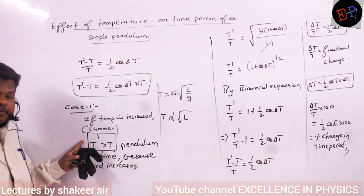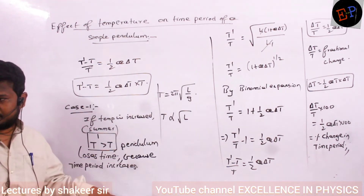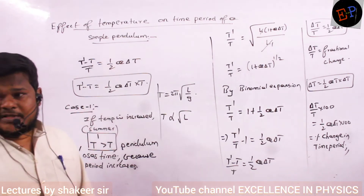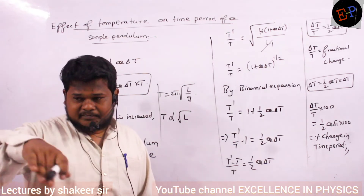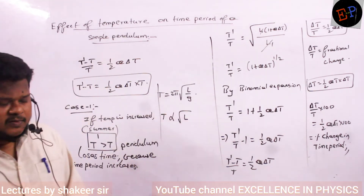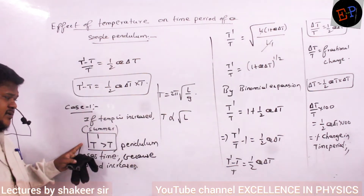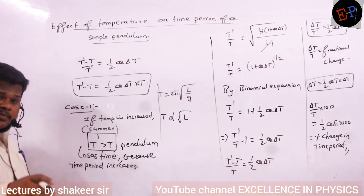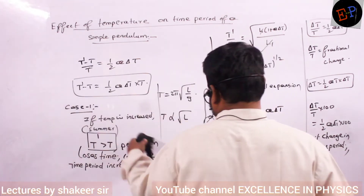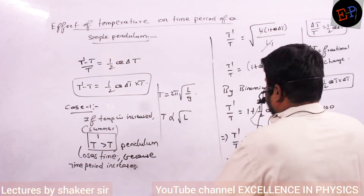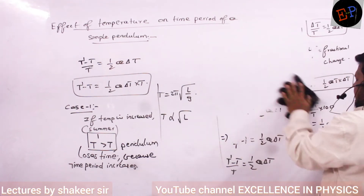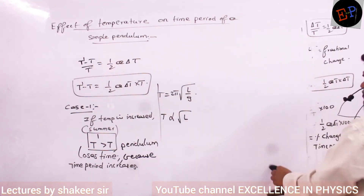Don't be confused — time period and time are different. Time period means the time of oscillation of the pendulum. Time means the general time which we see for reading. If time period of oscillation increases, time reduces — it loses time.